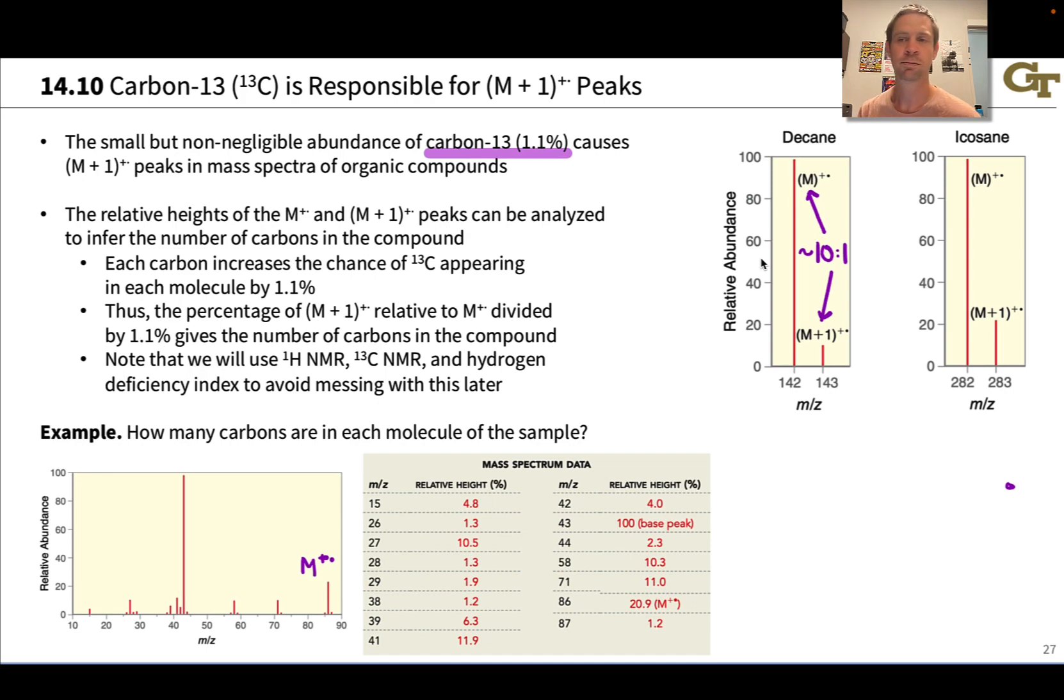Icosane has 20 carbons, C20H42, and in that compound we see about a 5 to 1 ratio of M to M+1. With 20 carbons it's even more likely, about twice as likely, that the molecule is going to contain at least one carbon-13 atom in it.